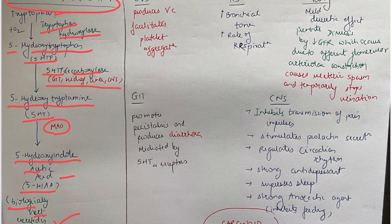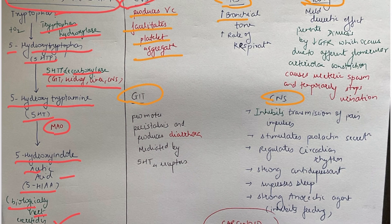Now let's look at the functions of serotonin, which acts on the CVS, RS, kidney, GIT, and CNS. In the CVS, it produces vasoconstriction and facilitates platelet aggregation. In the RS, it increases bronchial tone and the rate of respiration. In the GIT, it promotes peristalsis and produces diarrhea, mediated by 5-HT4 receptors.